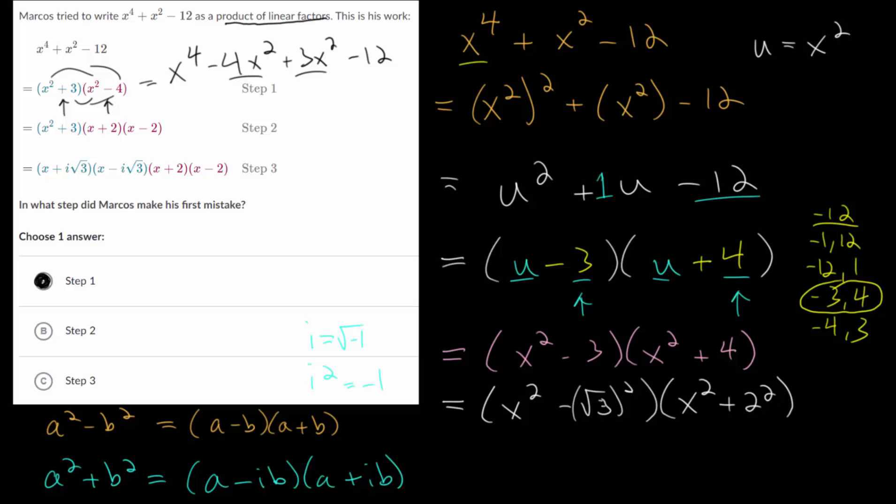Plugging everything into these formulas, we would get here just x minus root three multiplied by x plus root three. Over here we will now have imaginary numbers: we would get x minus two i multiplied by x plus two i.